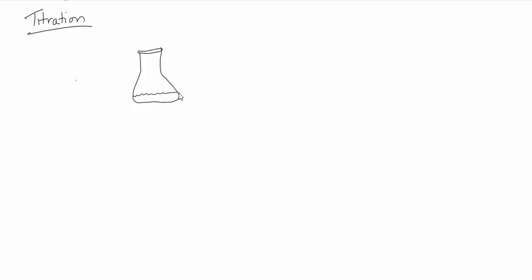Depending on the lab kit you have, you may have an Erlenmeyer flask. In that Erlenmeyer flask, you would put some volume of an unknown acid — say, 15 milliliters of HCl, but we don't know its concentration. Then we're going to put in a couple of drops of an indicator. An indicator is a weak organic acid that is one color in an acidic environment and another color in a basic environment, so that gets all swirled around.